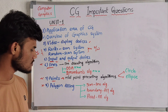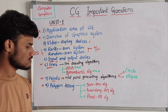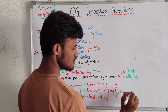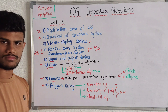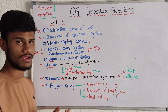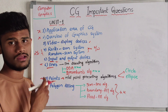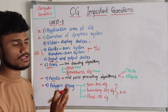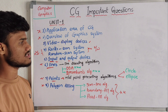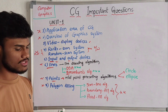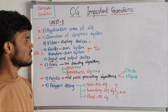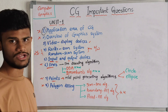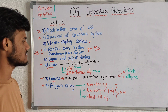Then next we have polygon filling. In polygon filling, we have three important algorithms. You need to explain these three algorithms individually or by combination. First, read applications of computer graphics — it is a basic question.